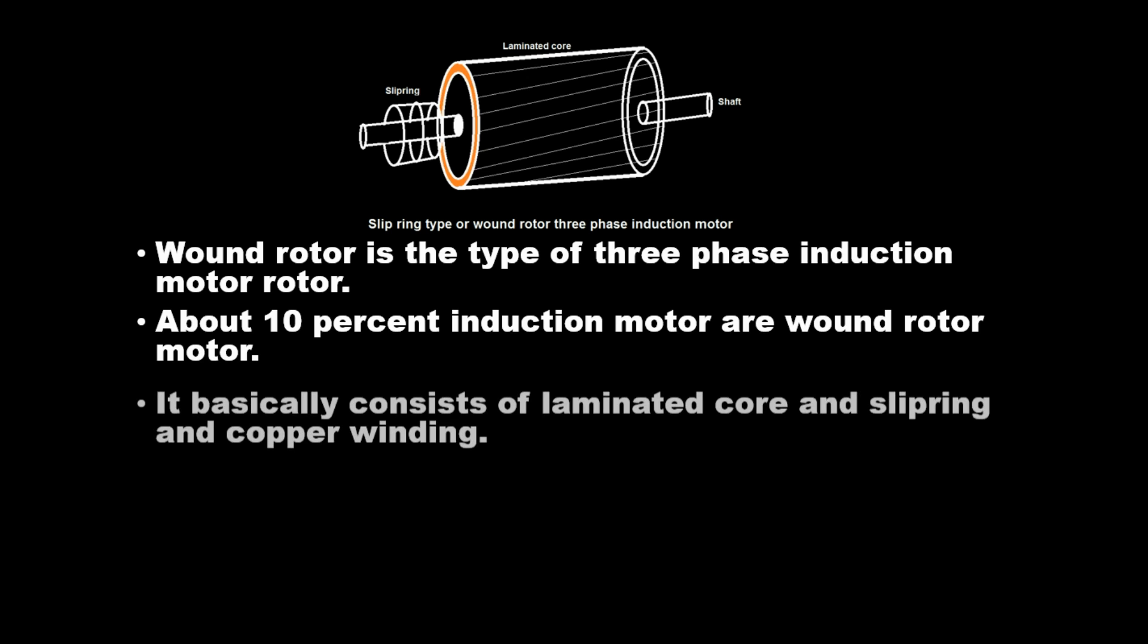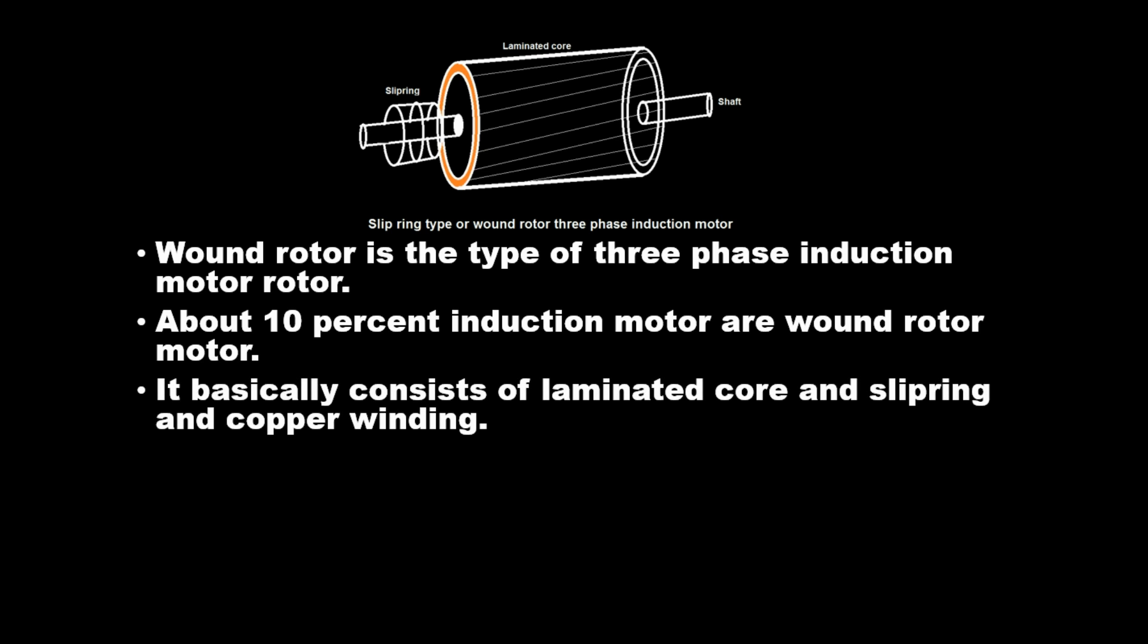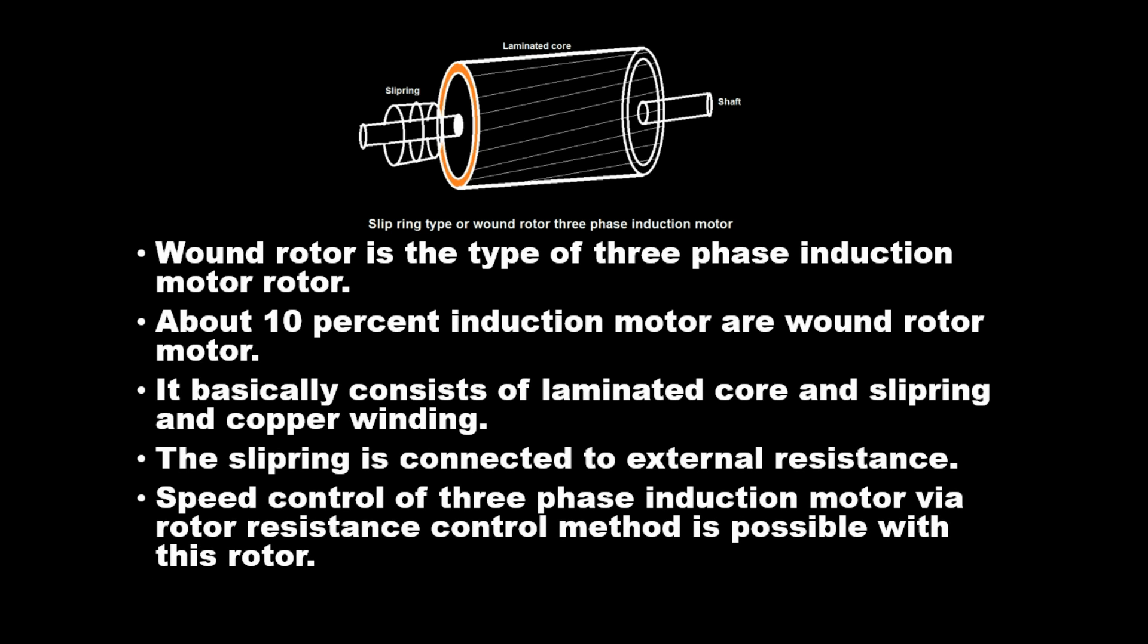It basically consists of laminated core, slip ring, and copper winding. The slip ring is connected to external resistance. Speed control of three-phase induction motor via rotor resistance control method is possible with this rotor.